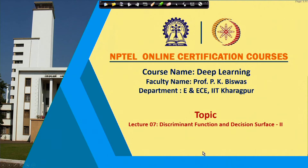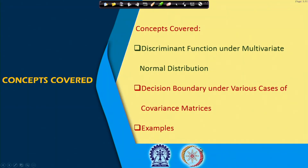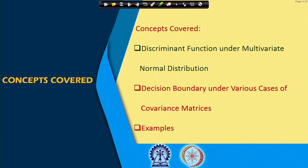Welcome to the NPTEL online certification course on deep learning. In the previous class we had started our discussion on discriminant functions and the boundary between different classes. We talked about the discriminant function under multivariate normal distribution, and in today's class we are going to continue and see how the decision boundary under various conditions of the covariance matrix can be determined.